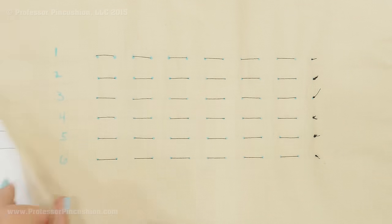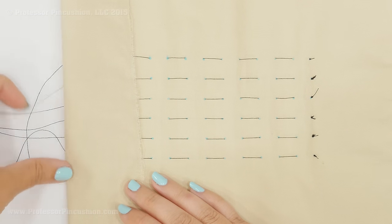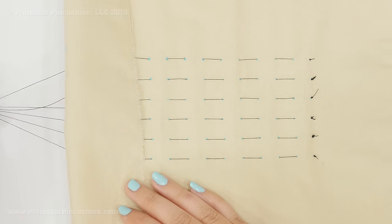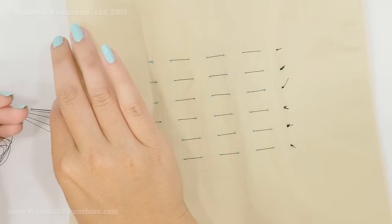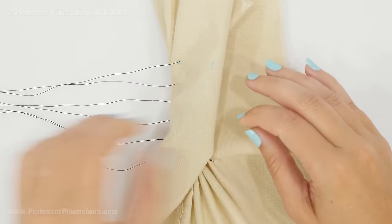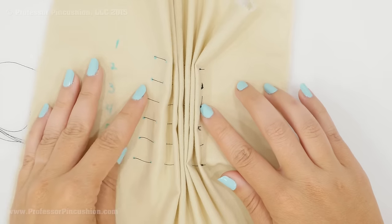When you finish with your rows, you're going to go ahead, take your strands of thread on the one end that does not have a knot, and you're going to pull them in order to create your pleats.